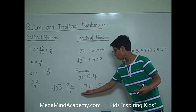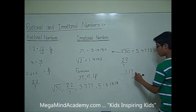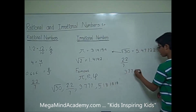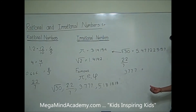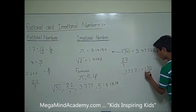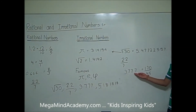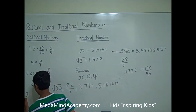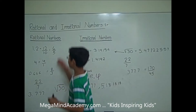Now let's go to the next example: 3.777... 3.777... can be made into a fraction. The fraction for 3.777... is 170 over 45. 170 over 45 is not in simplest form but it can be made into a simple fraction, so 3.777... is a rational number.